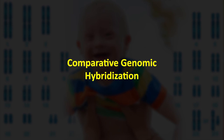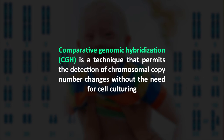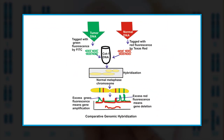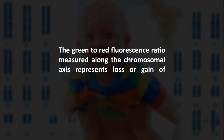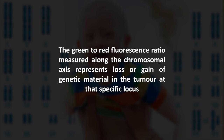Comparative genomic hybridization (CGH) is a technique that permits detection of chromosomal copy number changes without the need for cell culturing, providing a global overview of chromosomal gains and losses throughout the whole genome of a tumor. Tumor DNA is labeled with a green fluorochrome and mixed with red-labeled normal DNA, then hybridized to normal human metaphase preparations. The green and red labeled DNA fragments compete for hybridization to their locus of origin on the chromosome. The green-to-red fluorescence ratio measured along the chromosomal axis represents loss or gain of genetic material in the tumor at that specific locus.